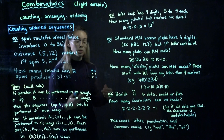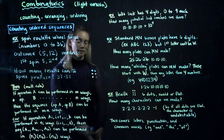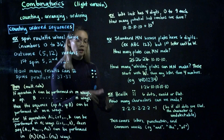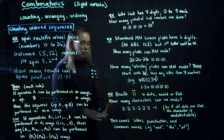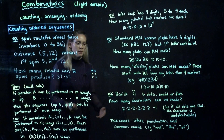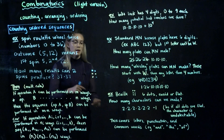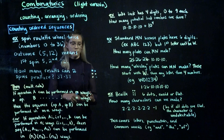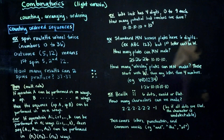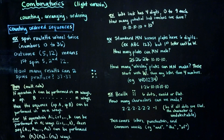This is definitely more than the number of letters in the alphabet, so braille covers letters, punctuation, and some common words like 'and,' 'the,' 'or,' and 'of.'